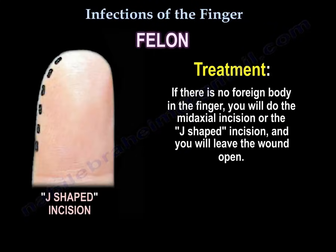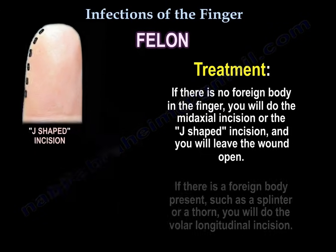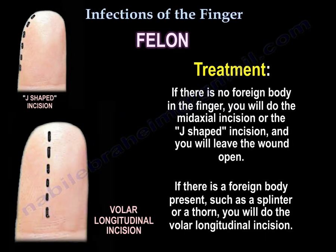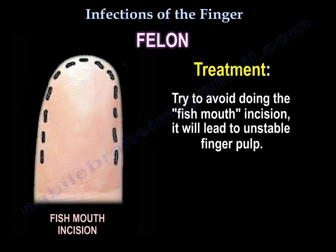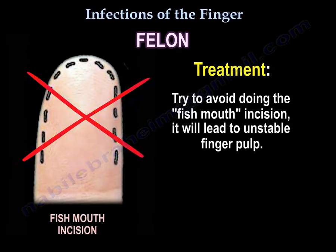If there is no foreign body in the finger, you will do the mid-axial incision or the J-shaped incision, and leave the wound open. If there is a foreign body present, such as a splinter or a thorn, you will do the volar longitudinal incision, as you can see here. Try to avoid doing the fish mouth incision, as it will lead to an unstable finger pulp.